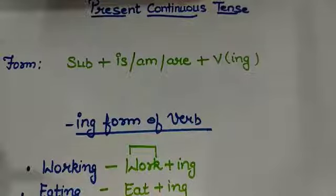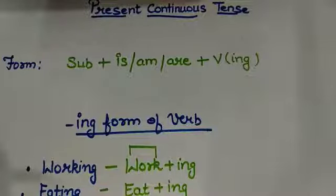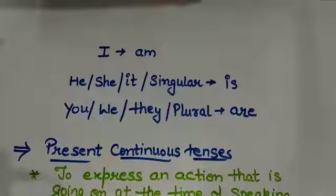So the main important thing in present continuous tense is ing form because it represents that action is actually going on at the time of speaking. Now, let us see this thing.